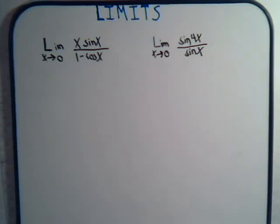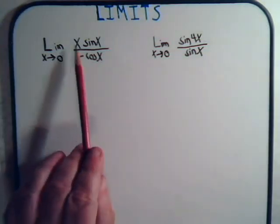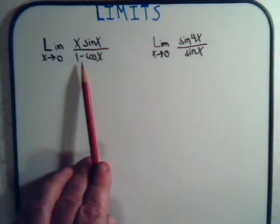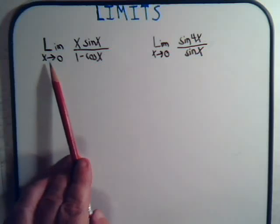Okay, in this video we have two trick problems that both involve limits that we're going to try to tackle. The first one here we have x times the sine of x divided by 1 minus the cosine of x. And we want to take that limit as x approaches 0.